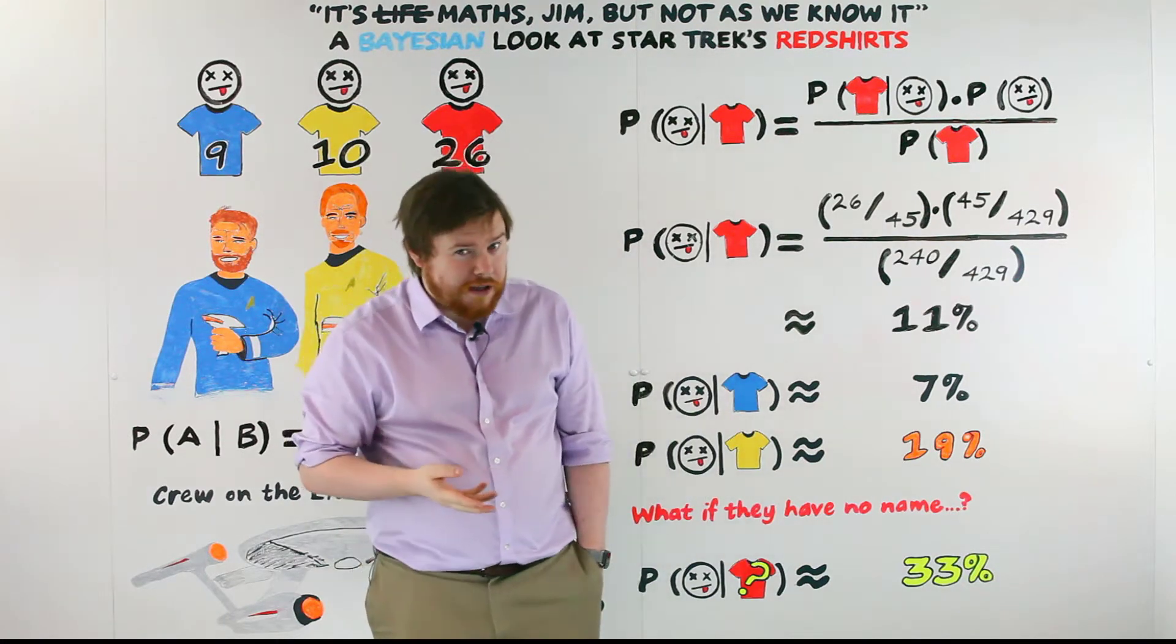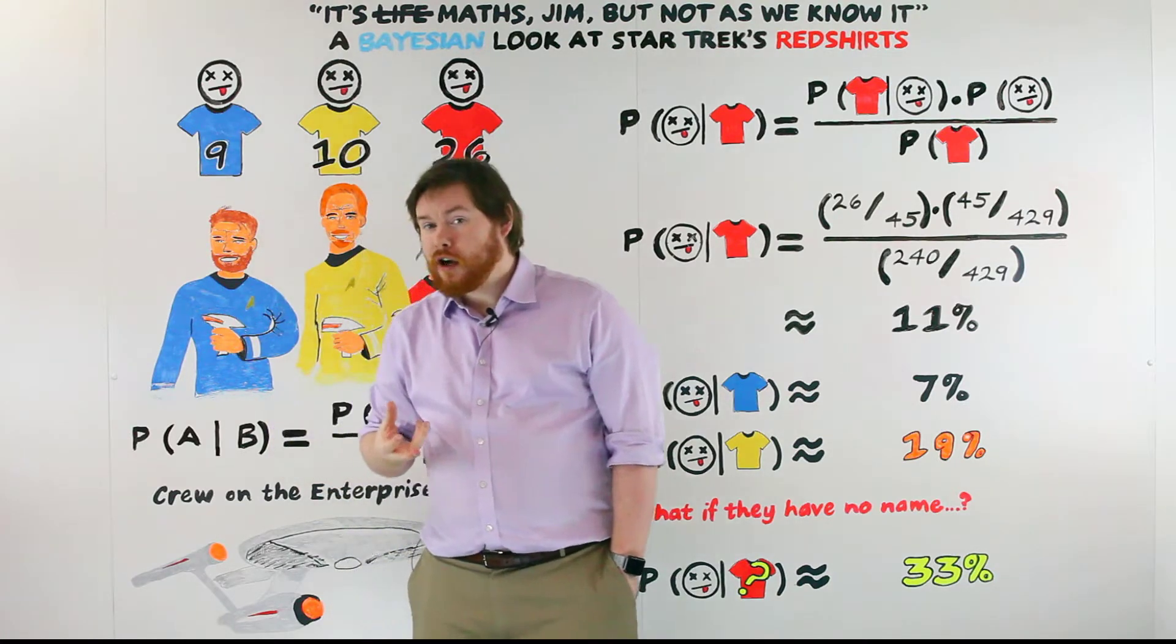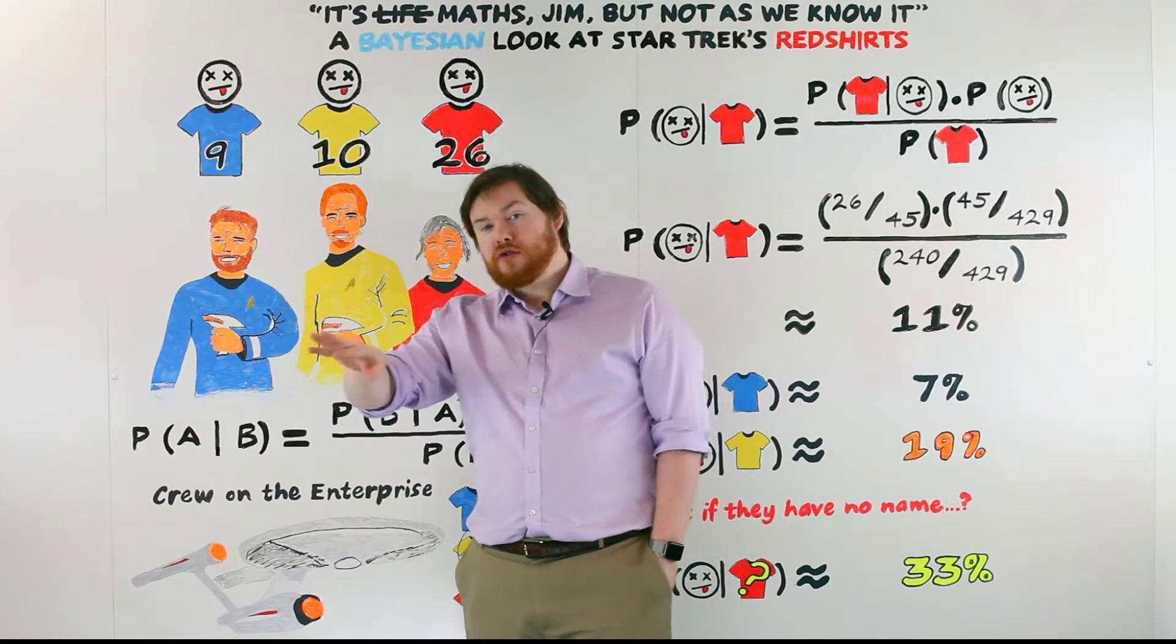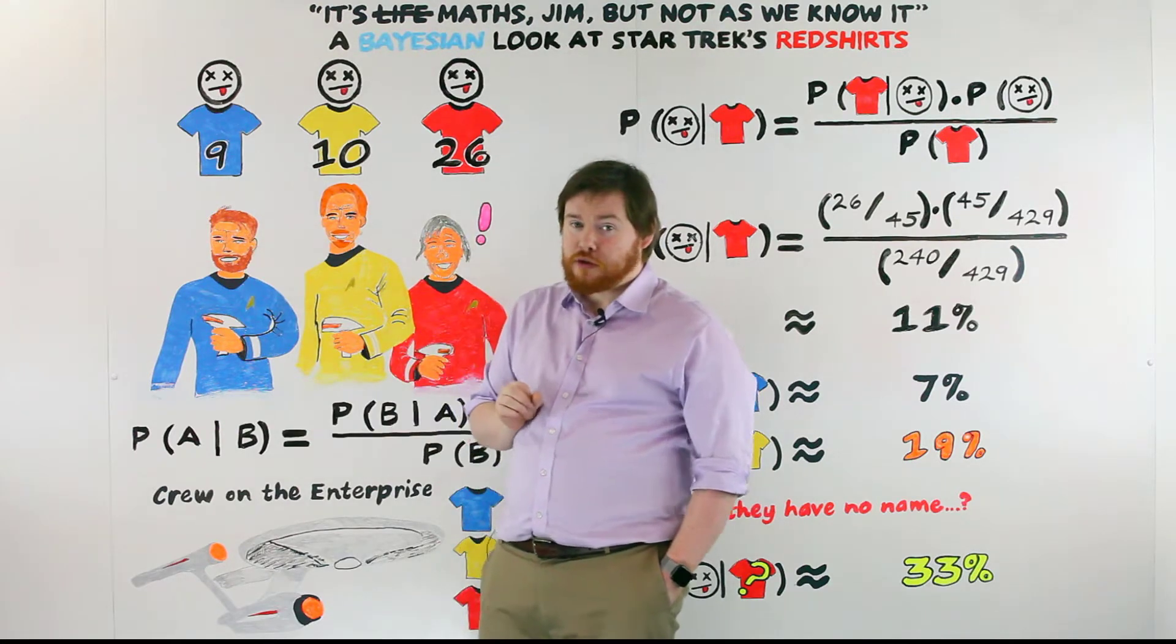My name's Jim and today we're going to be taking a Bayesian look at Star Trek's red shirts. In particular, the idea that the red shirt wearing characters in Star Trek are the perfect example of a disposable character who's unlikely to make it to the end of the episode without dying.